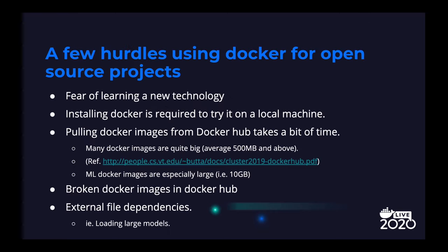We found a few common issues while helping developers Dockerize their projects. First, some developers had an unknown fear of learning something new, even if it was simple enough to learn. Second, installing Docker on their laptop took a significant amount of time, although it didn't cause much trouble. Third, pulling Docker images from Docker Hub took a bit of time, especially for large images, which is quite common for machine learning projects. We also experienced trouble from broken images in Docker Hub, and developers were confused when the app could not find anything in the container but required external file dependencies, such as loading external ML models.